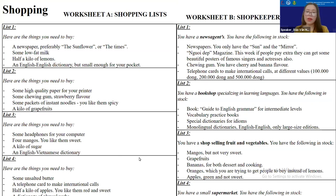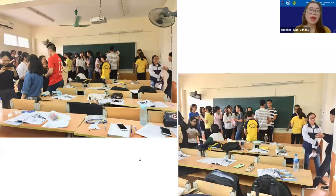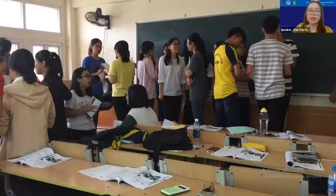A lot of teachers complain that their classrooms are too small and too narrow, and they have very crowded classes, so they cannot set up proper activities because there is not much space for students to move around. I can show you an example — this is one of my classes. The classroom is very small and crowded, but we can ask students to stand up and do pair work and group work like this.